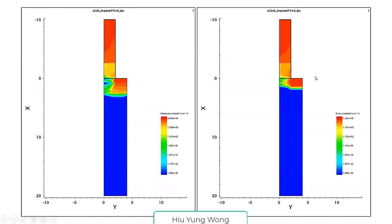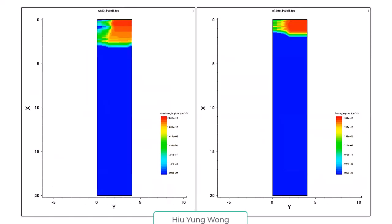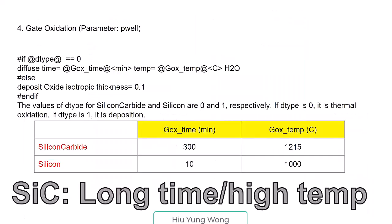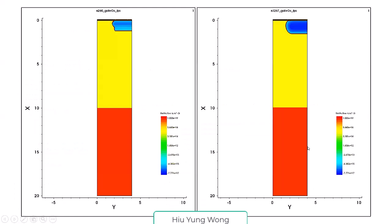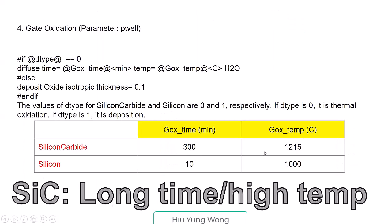After you do implantation, you want to grow the oxide. Look at silicon: 10 minutes, 1000 degrees C. Silicon carbide needs 300 minutes, 1200 degrees C for the same thickness. You see that after that they have the same thickness, but this one is much longer and higher temperature.